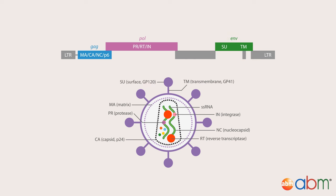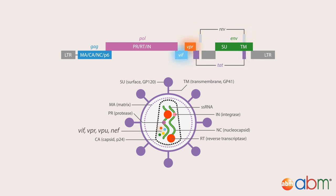The lentivirus genome also contains two important regulatory genes, TAT and REV, that activate viral transcription, as well as four accessory genes — VIF, VPR, VPU, and NEF — that are less essential for virus replication in host cells.